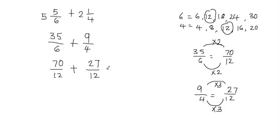Now I can see that I got the denominators equal, so I can go ahead and add the fractions. My denominator is not going to change — it's going to stay 12. And we're going to add the numerators. 70 plus 27 is going to give me 97. So I got 97 over 12.